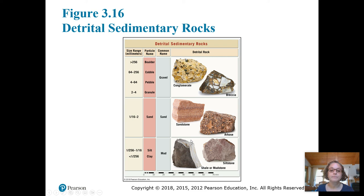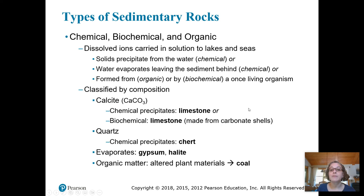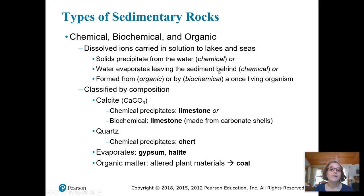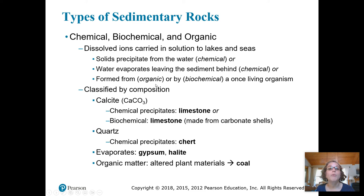The other types of sedimentary rocks besides detrital are either chemical, biological, or organic in nature. These start out as dissolved ions carried in solution or created and excreted by an organism, usually in lakes or seas. So these are solids that come out of having been dissolved in water — they precipitate, meaning forming a solid from a dissolved solution. We also get evaporites when a body of water like a lake dries out and leaves behind the dissolved minerals or ions. Among these chemical, biological, and organic rocks, we classify them by composition and then further by the process which formed them.